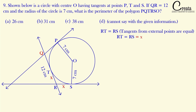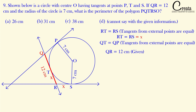Similarly, if we take point Q as an external point, QT and QP are the two tangents toward the circle, so QT and QP will be equal — same concept. The complete length QR is given as 12 centimeters, and TR we have assumed as x, so QT = 12 − x.